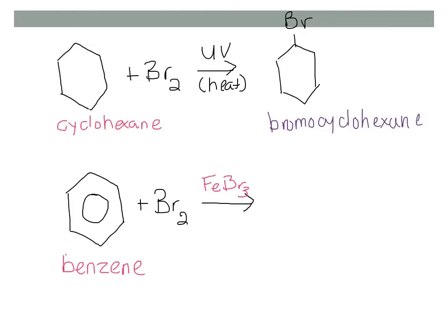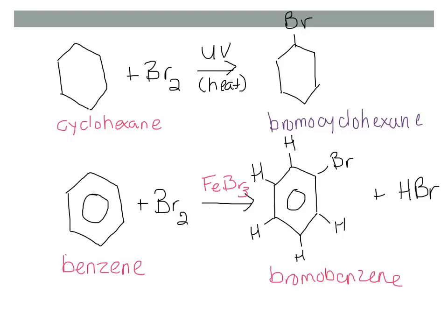We talked about in the previous video that benzene is a special class of compound called an aromatic compound. Like alkanes, aromatics are very stable. So in order to substitute one of the hydrogens on benzene, a catalyst is required. And that catalyst is FeBr3, in this case.